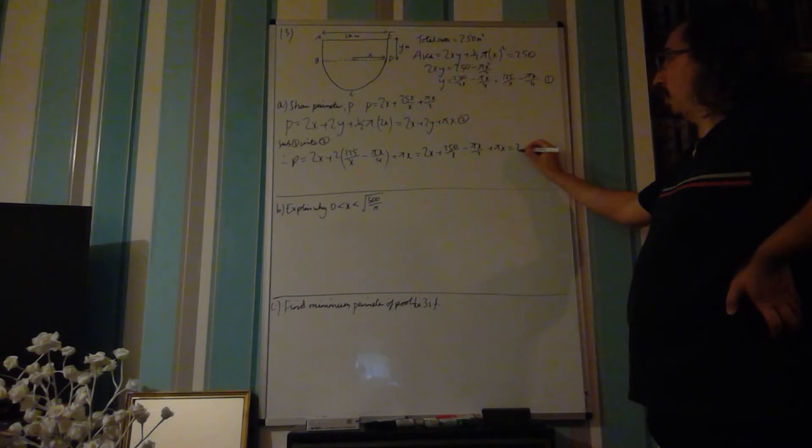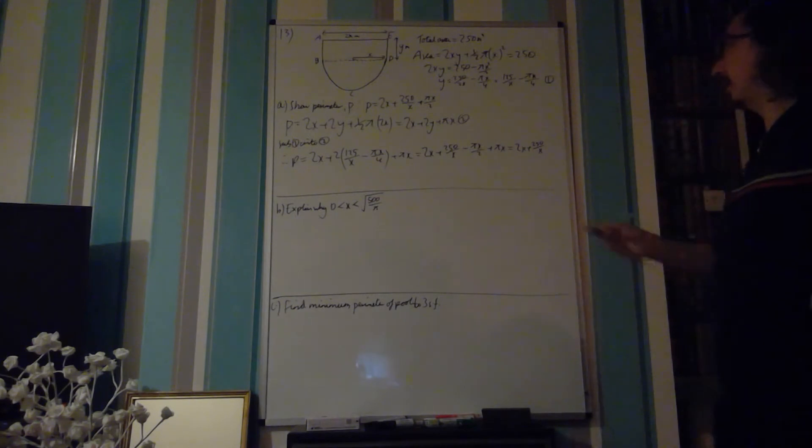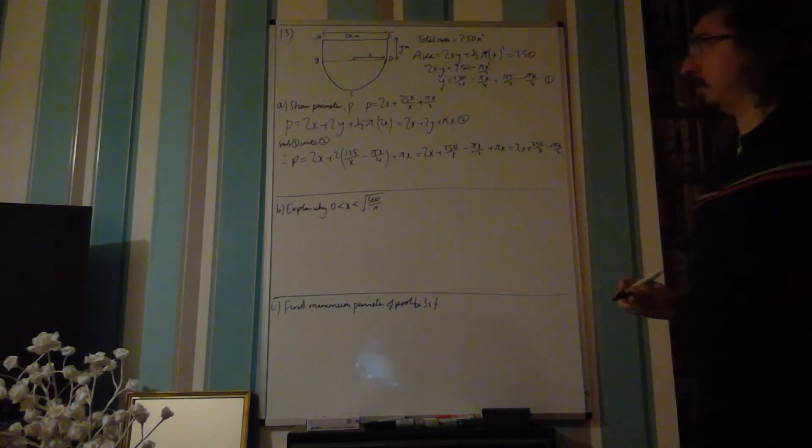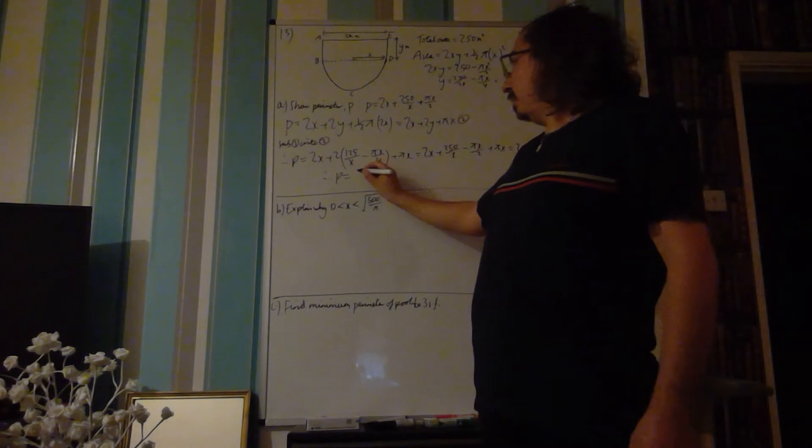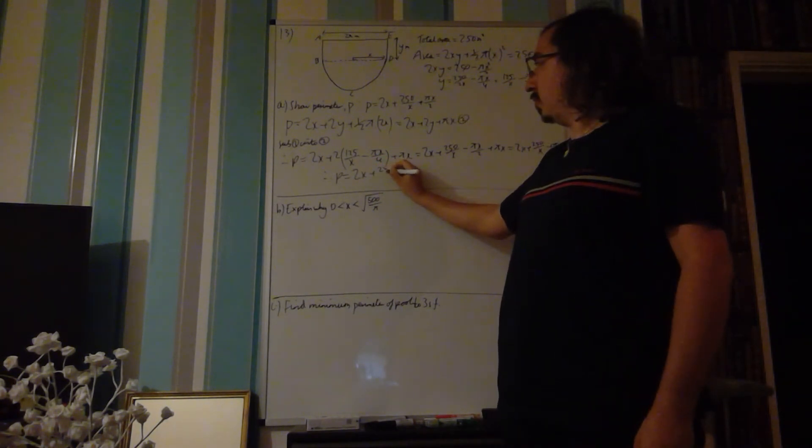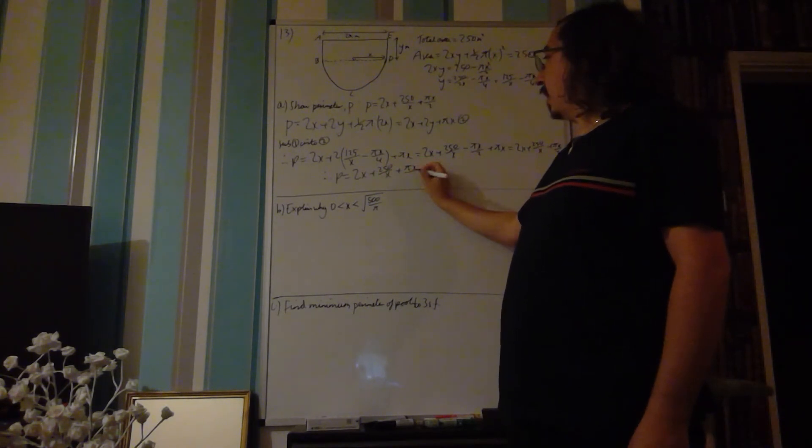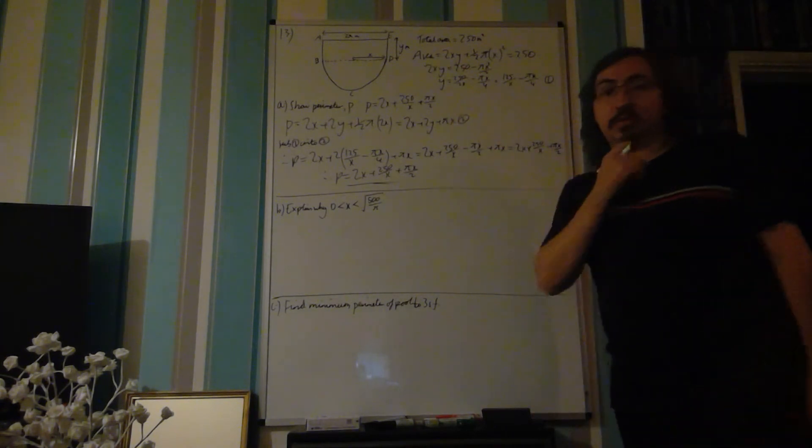That is equal to 2x plus 250 over x minus pi x over 2 plus pi x. And finally, that is equal to 2x plus pi x is plus pi x over 2. Let's just write that to clarify that P is equal to 2x plus 250 over x plus pi x over 2. And that's what they're asking you to show.